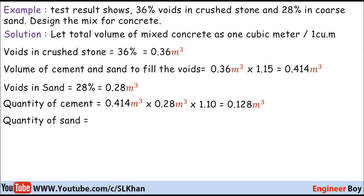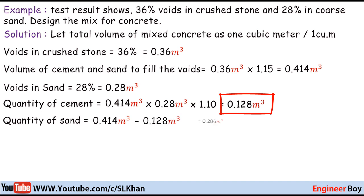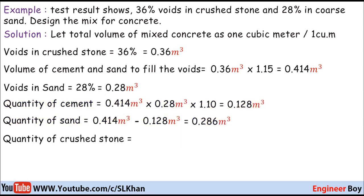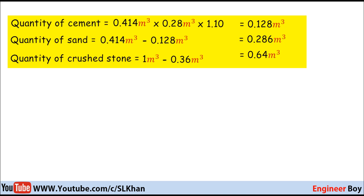Now I can calculate the quantity of sand or fine aggregate. The total cement and sand is 0.414 cubic meters, so subtracting the quantity of cement, which is 0.128 cubic meters, gives the quantity of sand as 0.286 cubic meters. For crushed stone, we subtract the voids in crushed stone from the total volume: one cubic meter minus 0.36 gives the quantity of crushed stone as 0.64 cubic meters.